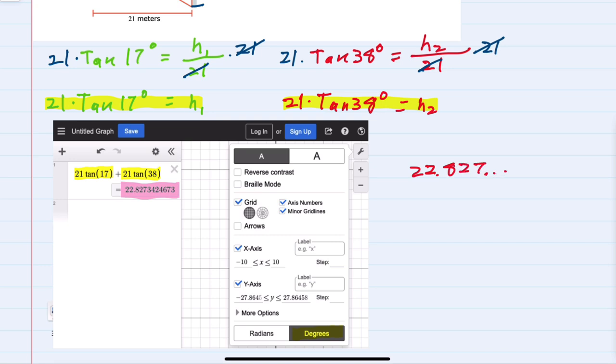We were asked to round to the nearest tenth. So looking at the tenth place is an eight, the next digit is a two, so we would round down to 22.8, and our units here are meters. So the total height of that movie screen is 22.8 meters.